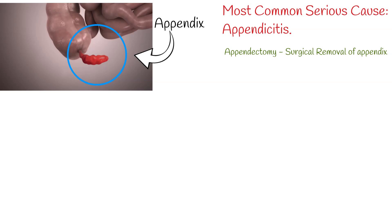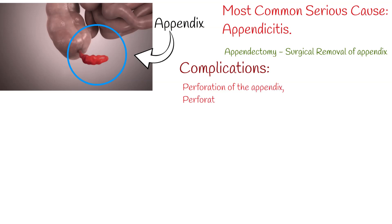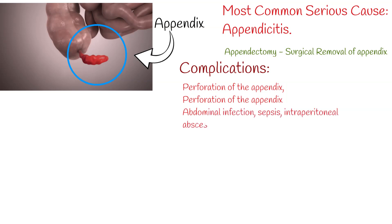Appendicitis has its highest incidence between the ages of 10 and 30 years. Untreated appendicitis can lead to perforation of the appendix, which typically occurs within 24 to 36 hours of the onset of symptoms. Perforation of the appendix can cause intra-abdominal infection, sepsis, intraperitoneal abscesses, and rarely death.